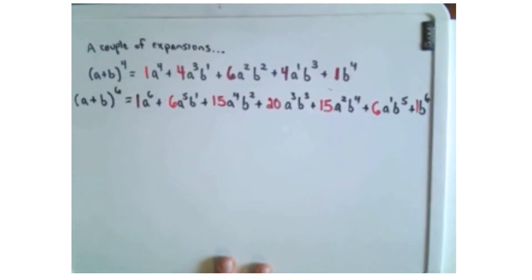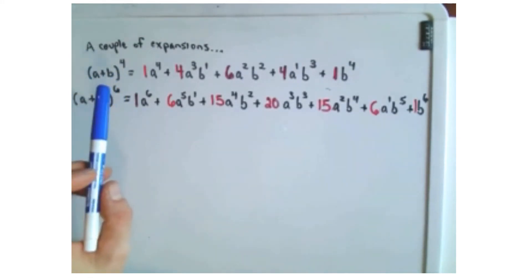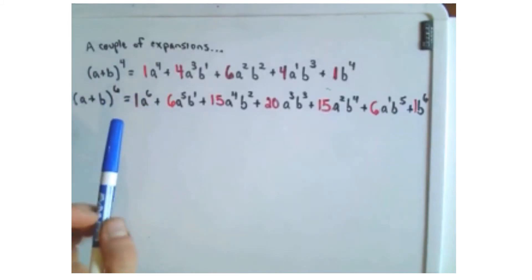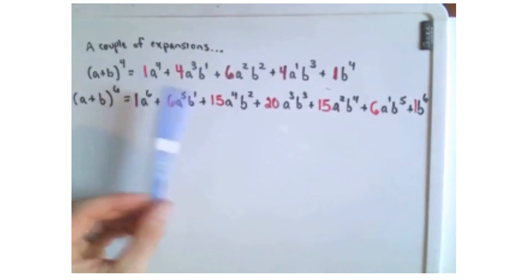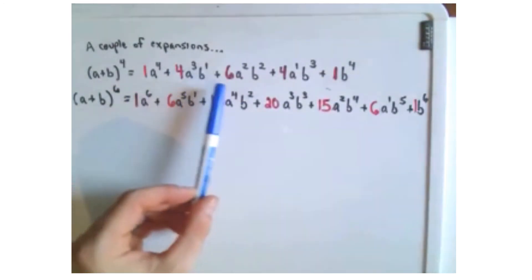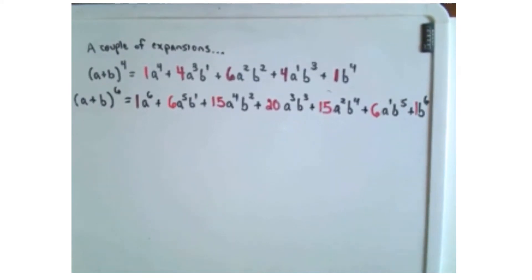You can check my arithmetic here. I did a couple of expansions. (a + b) to the fourth power gives: 1a to the fourth plus 4a cubed b, plus 6a squared b squared, plus 4a b cubed, plus b to the fourth. I've also done the same thing for (a + b) to the sixth power. The coefficients are highlighted in red to illustrate Pascal's triangle.